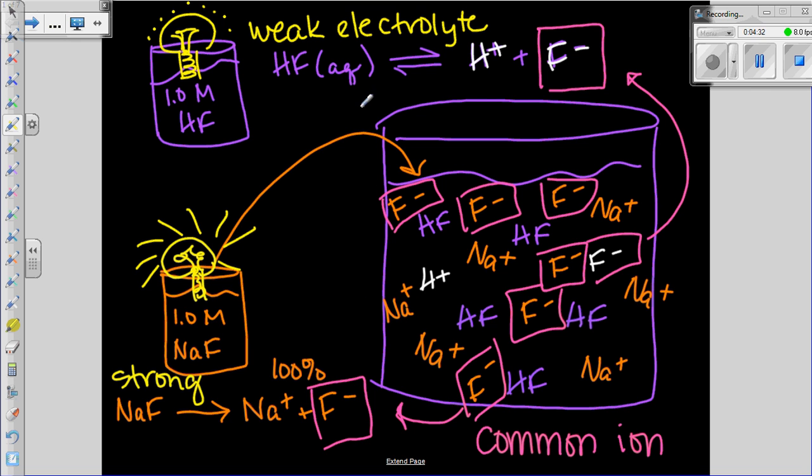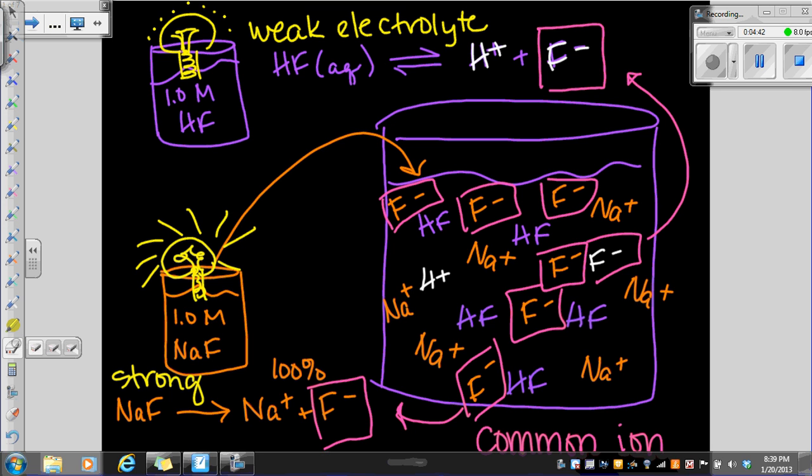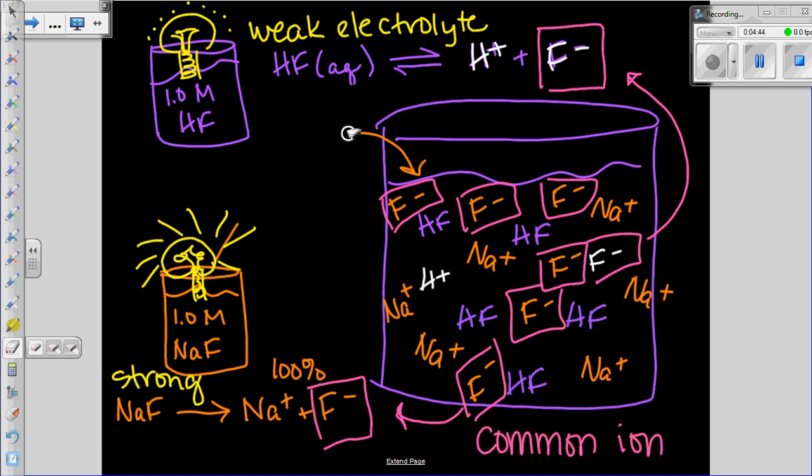So what we want to do is we want to look at this dissociation reaction for the weak electrolyte. If we only had this which is what I had drawn in the first example. So let me get rid of this arrow because you already know I added it to it. Let me sketch this HF solution one more time.